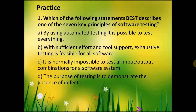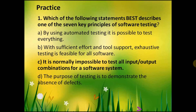Sample questions. Question one: which of the following statements best describes one of the seven key principles of software testing? A — by using automated testing it is possible to test everything: not true, not a principle. B — with sufficient effort and tool support, exhaustive testing is feasible for all software: not true. C — it is normally impossible to test all input/output combinations for a software system: yes, this is true, relating to the principle that exhaustive testing is impossible. D — the purpose of testing is to demonstrate absence of defects: not true. Correct answer: C.